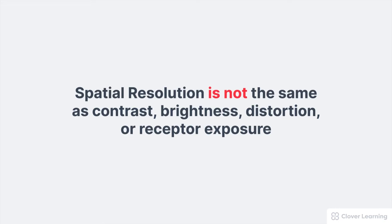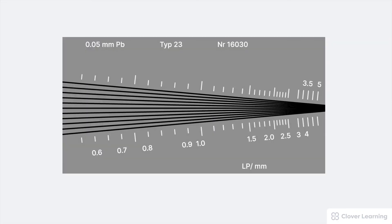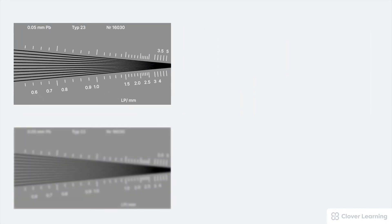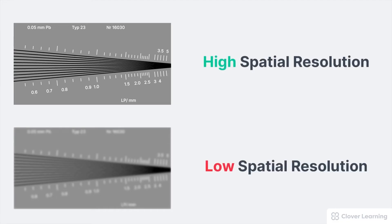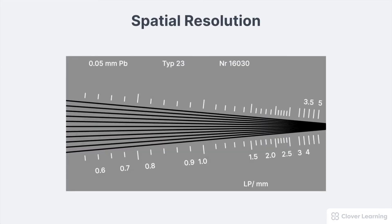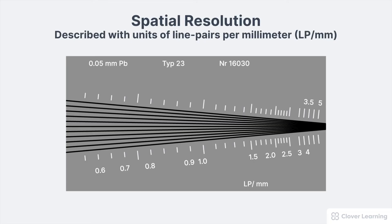Spatial resolution is its own quality factor — it's not the same as contrast, brightness, distortion, or receptor exposure. It's important for x-ray equipment to produce detailed images of small parts. This is actually tested using a tool called a line pairs device. The tool has several small line pairs placed close together, and as the lines converge, they get smaller and closer together. The smallest lines that can be visualized on the image represent the spatial resolution of the image. The upper image has a superior spatial resolution because smaller lines can be distinguished from each other. So radiographic spatial resolution is described with units of line pairs per millimeter.